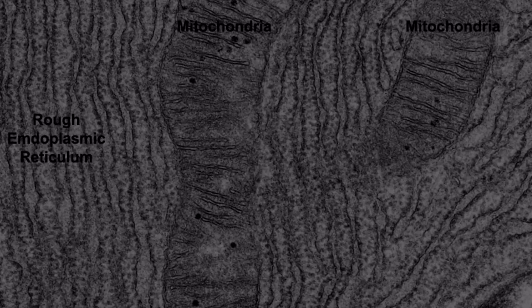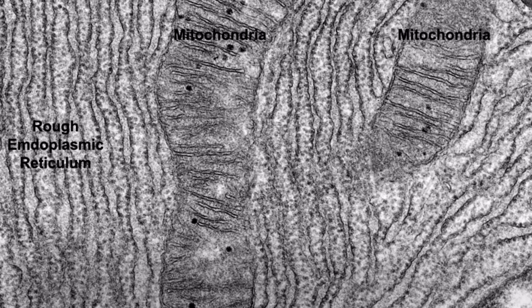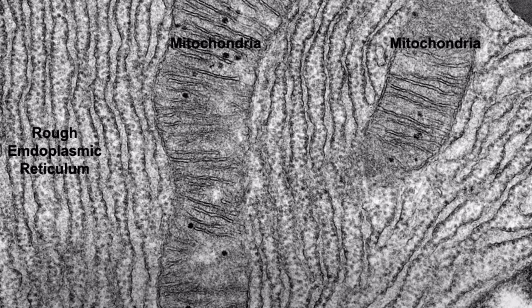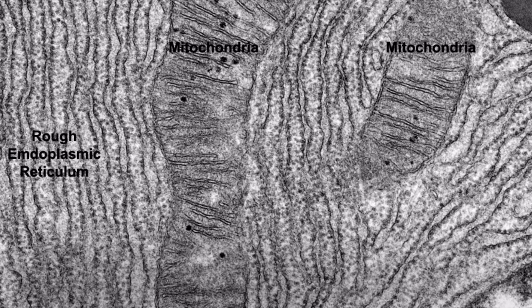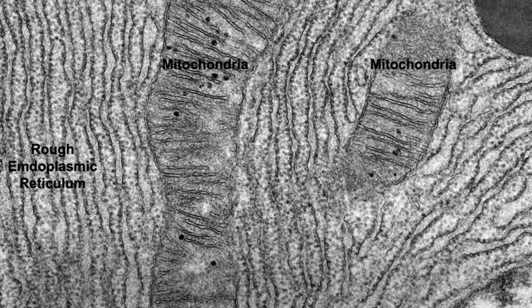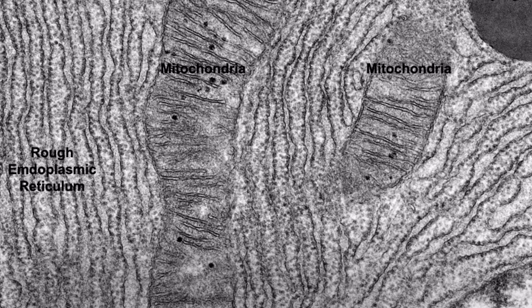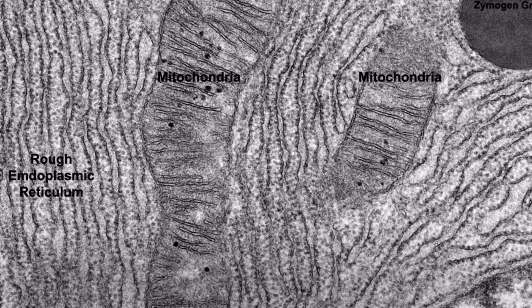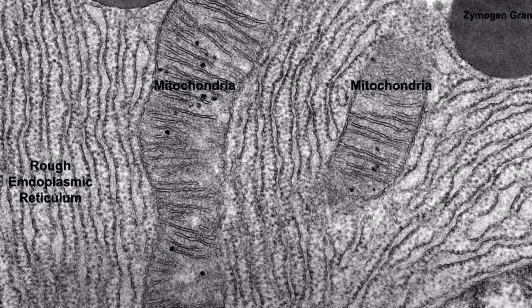While eukaryotic cells share the same organelles, the abundance of these organelles within the cells can give us a clue as to what the cells are specialised to do. For example, in this electron micrograph we see an abundance of rough endoplasmic reticulum, and we know that this organelle is used in protein synthesis. Therefore, this cell must be specialised in producing a large number of proteins.